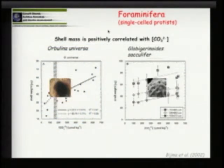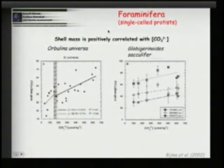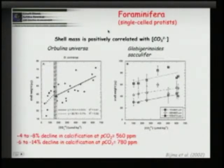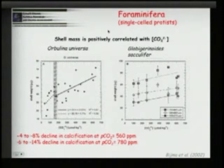With respect to foraminifera, both laboratory and field studies show a decrease in shell weight and thinning of shells, which we can also see in cores from recent sediments. We find about a 14% decline in shell weight at concentrations as high as 780 ppm.